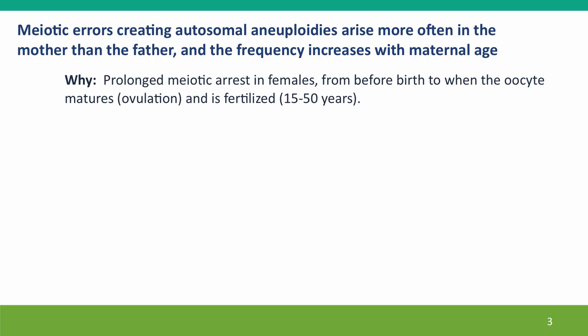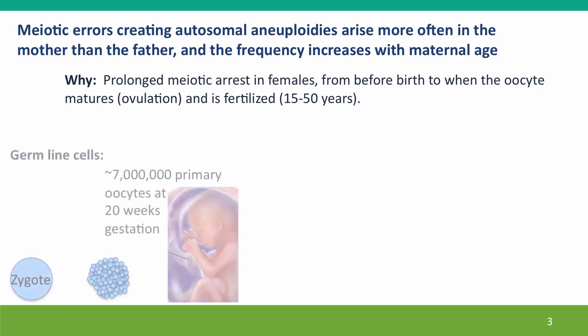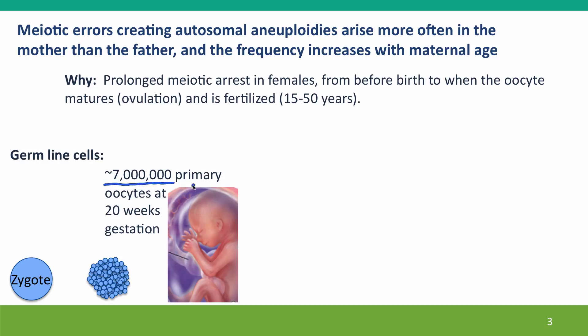We discussed this briefly in Module 7 when we talked about meiosis. Here's a little more detail. In the developing fetus, the cells that are set aside as the germline divide and divide many times, generating about 7 million cells that are called primary oocytes — cells that are ready to undergo meiosis. Those 7 million are present at about 20 weeks of gestation.